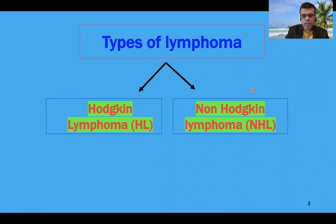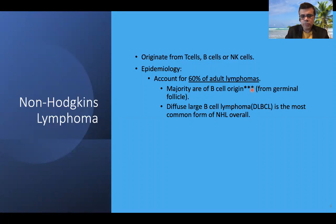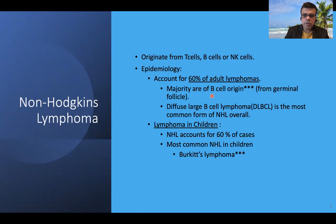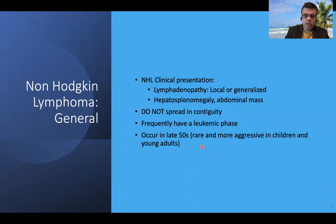Types of lymphoma can be broadly demarcated into Hodgkin's and non-Hodgkin's lymphoma. Non-Hodgkin's lymphoma constitutes the majority of lymphoid neoplasms; it can originate from T cells, B cells, or natural killer cells. Non-Hodgkin's lymphoma accounts for 60 percent of all adult lymphomas, and the majority are of B cell origin. B cell lymphomas are quite common and the majority originate from the germinal center of the follicles. DLBCL is regarded as the most common form of NHL overall.